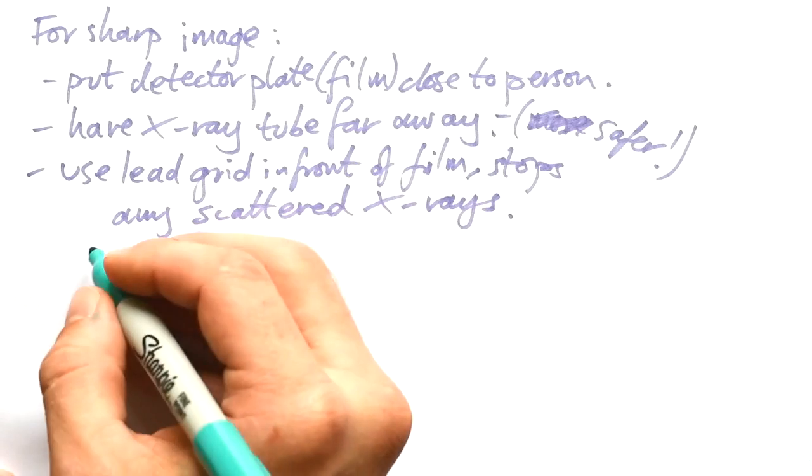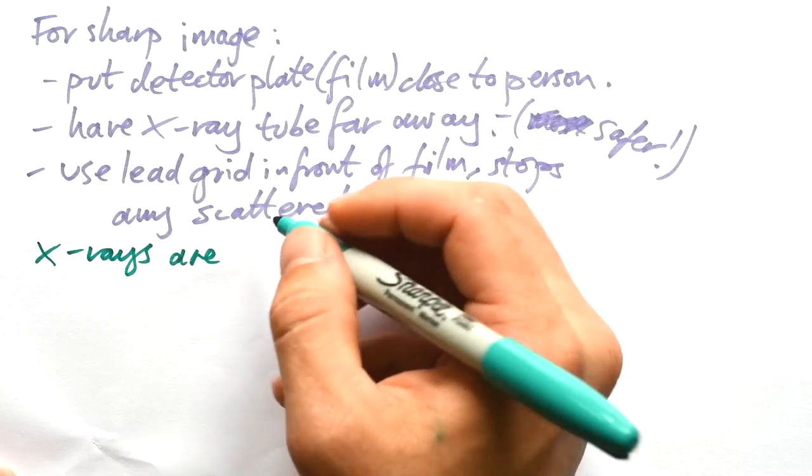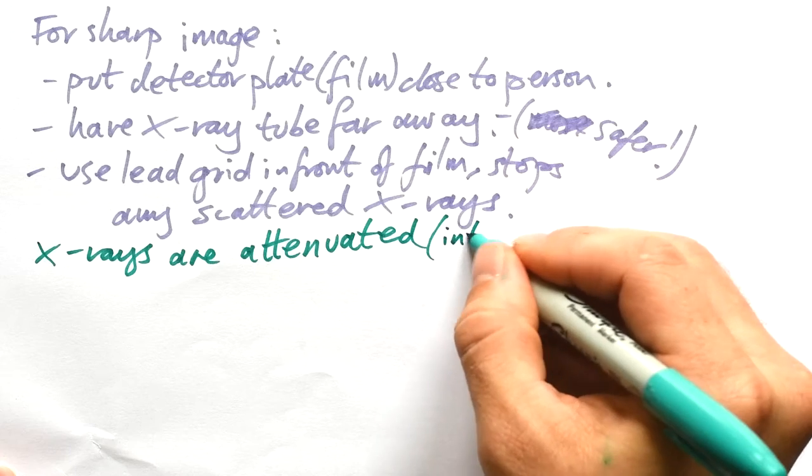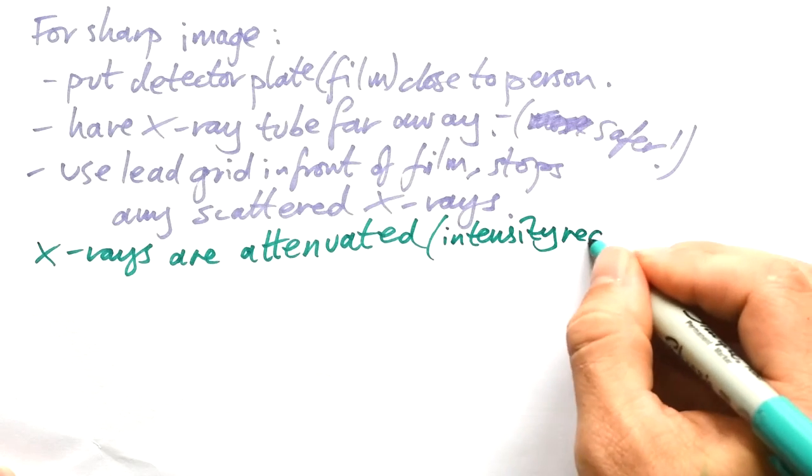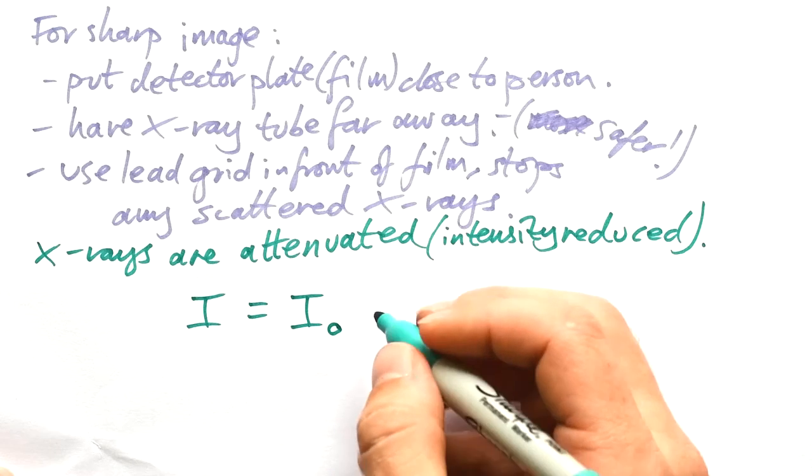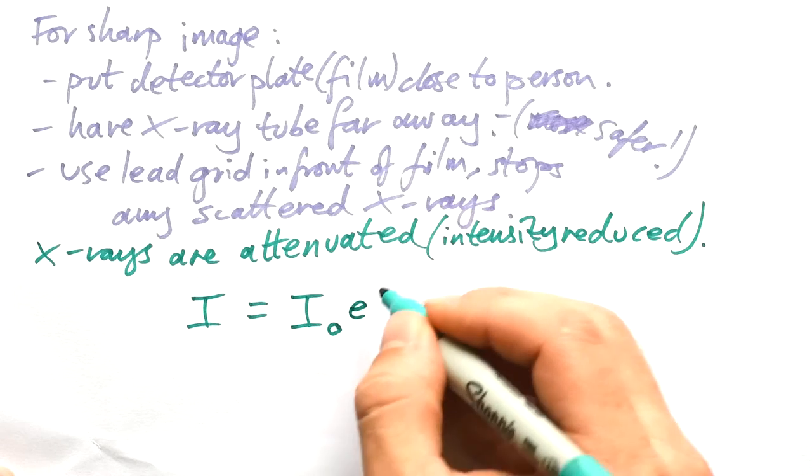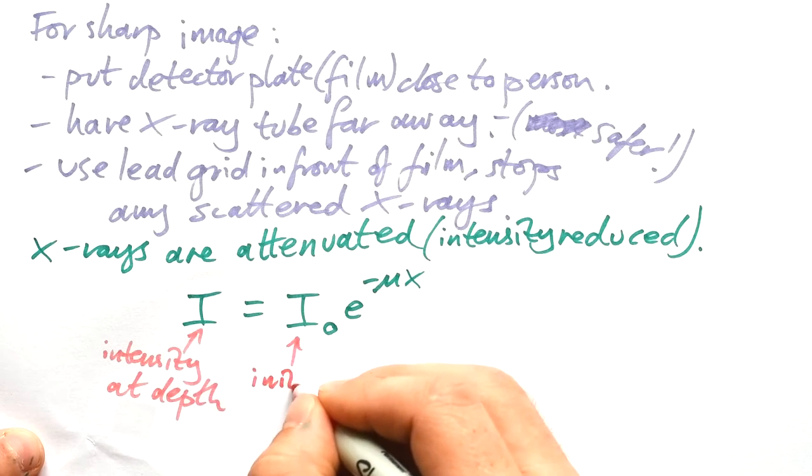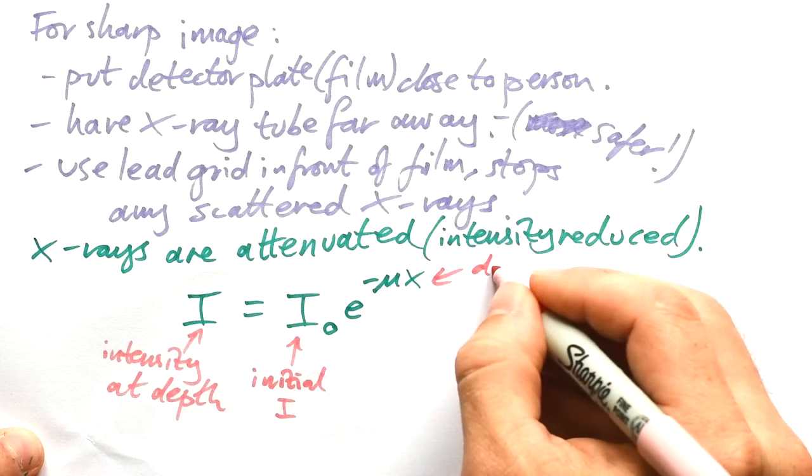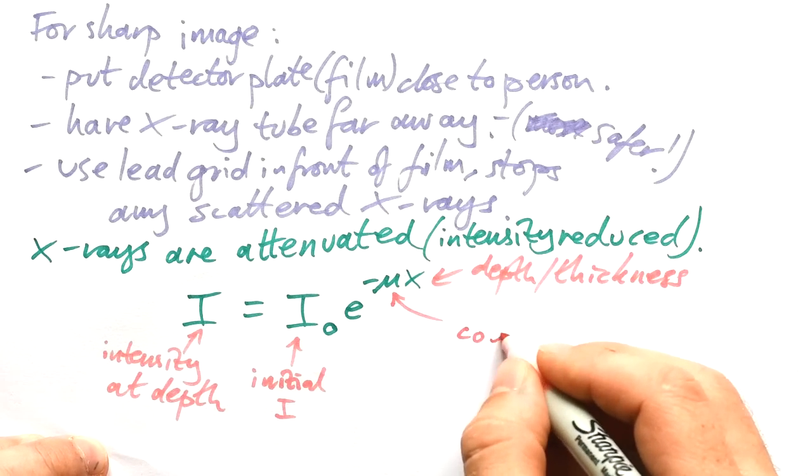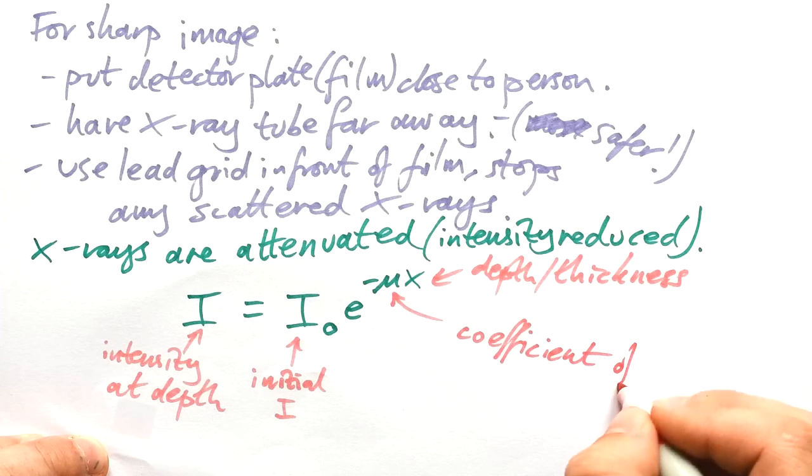Let's get an equation in this then. Whenever X-rays pass through anything, or when any radiation passes through anything, it's attenuated. That means that intensity is reduced the further the radiation goes through something. And so the intensity at a certain point is equal to the initial intensity times e to the minus mu x. This is the intensity at depth. This is the initial intensity. This is the thickness.